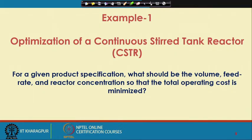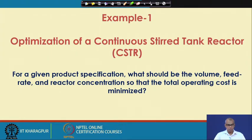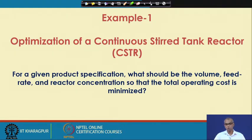For the CSTR problem, the problem is as follows: for a given product specification, what should be the volume, feed rate, and the reactor concentration so that the total operating cost is minimized? We are going to solve an optimization problem related to a continuous stirred tank reactor.